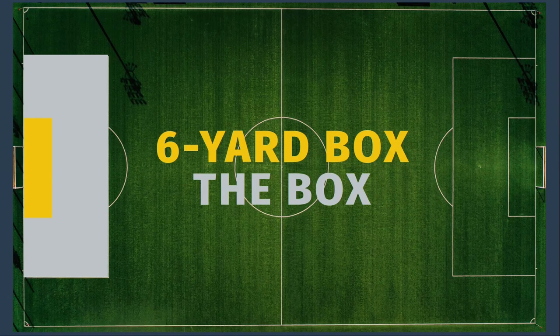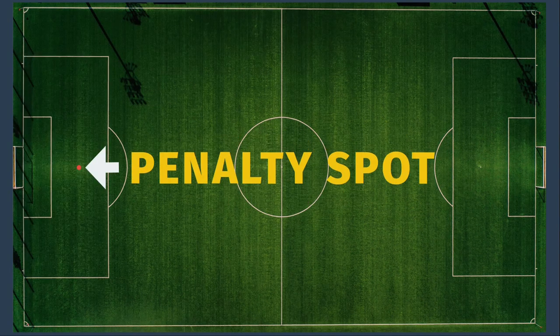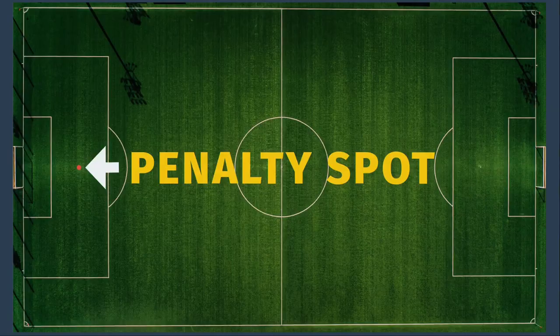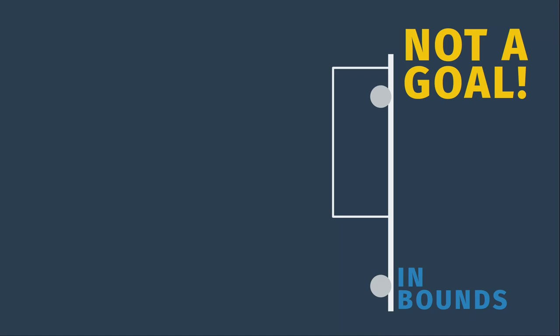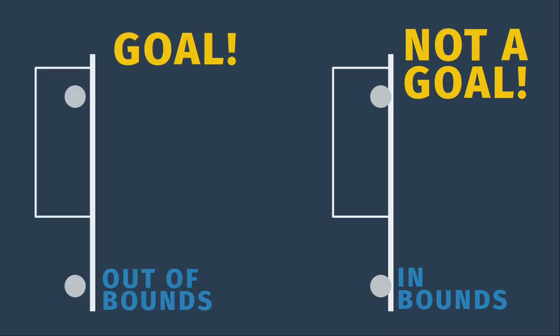There's a dot called the penalty mark, or the spot, that is 12 yards from the goal line, which is where penalty kicks are taken from. During play, the ball must stay in bounds, but not the player, even if that player is controlling the ball. A ball on the line is considered to be in bounds. However, if the ball goes over the line — even if it is in the air when it does so and then curves back in bounds before it lands — it is still considered out of bounds.